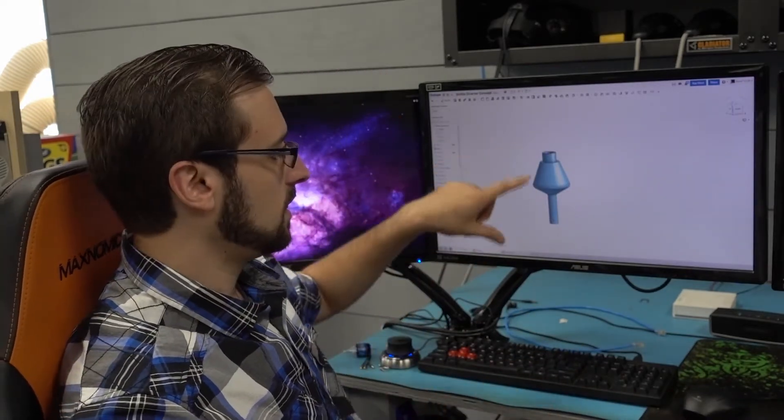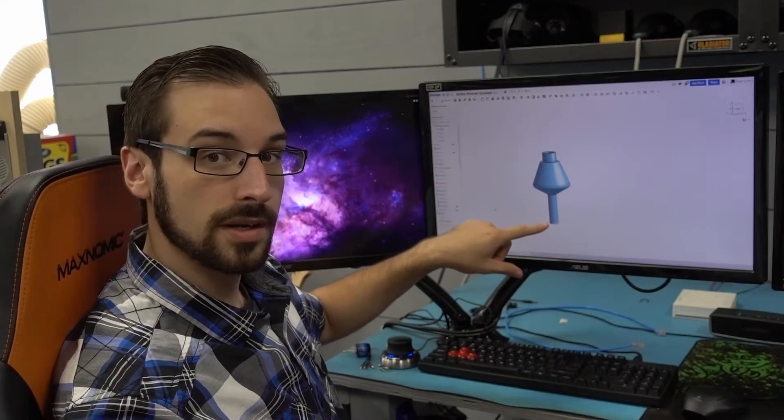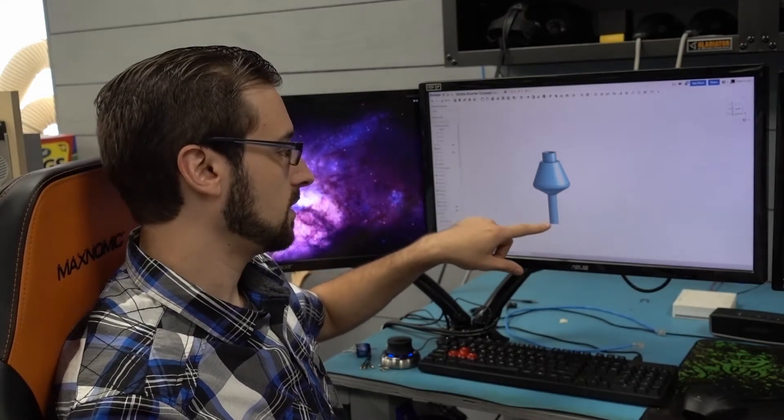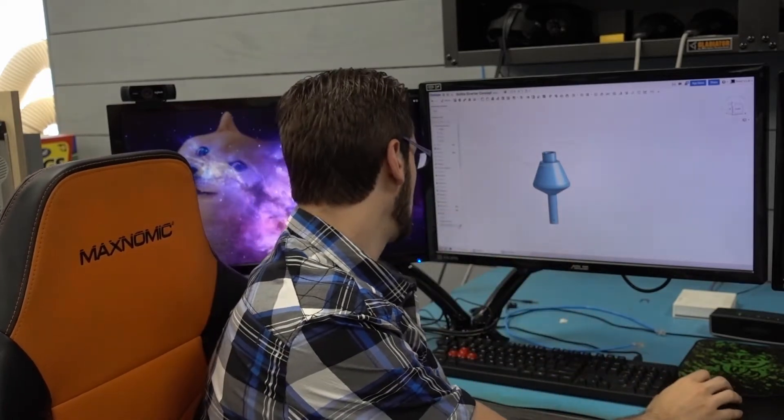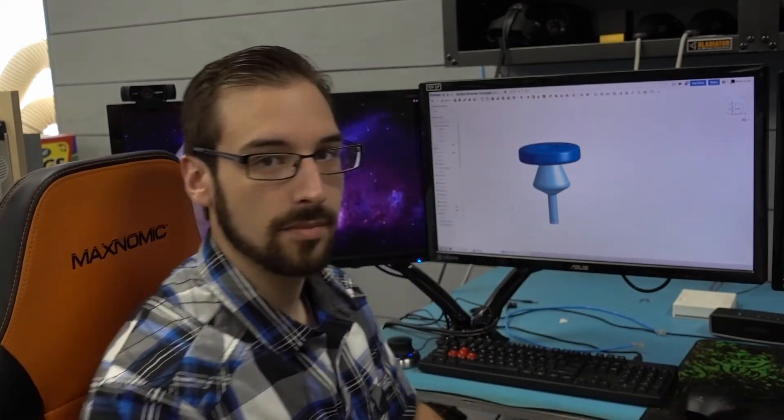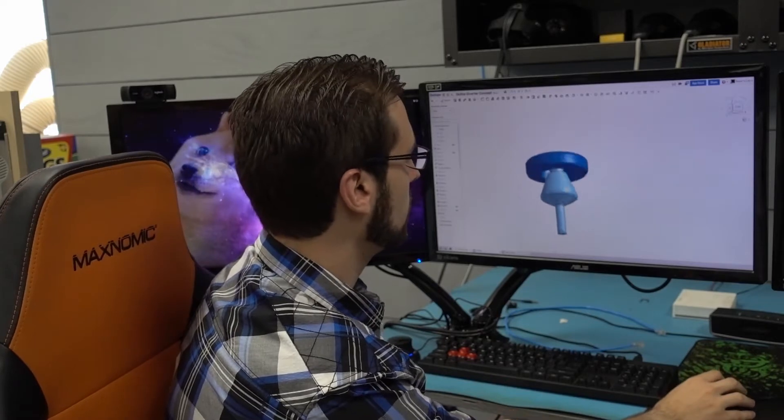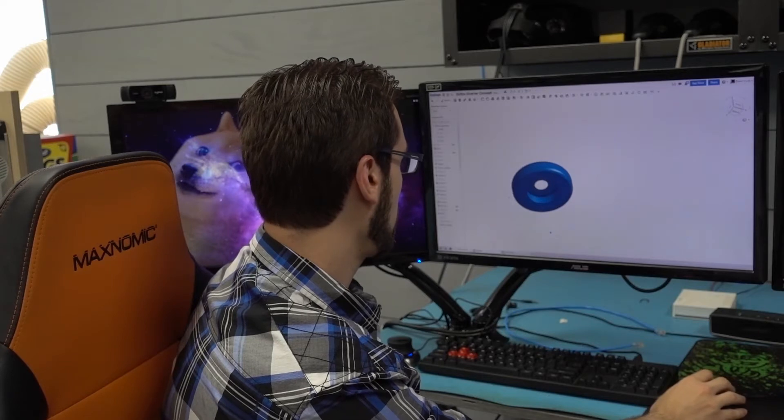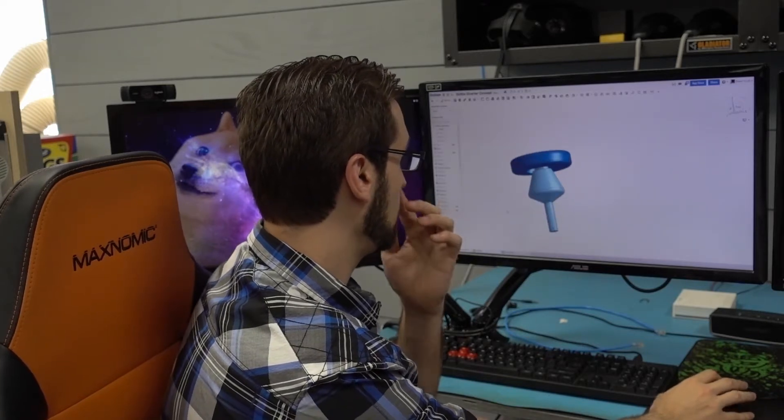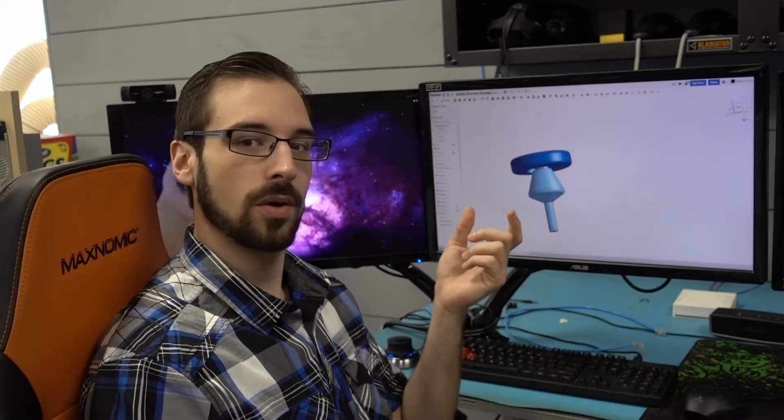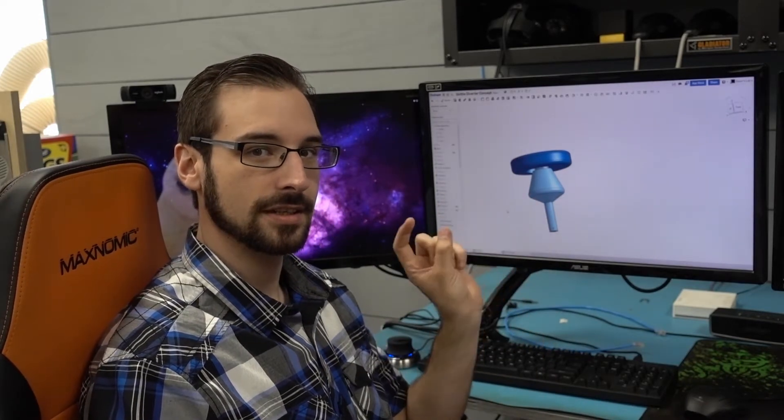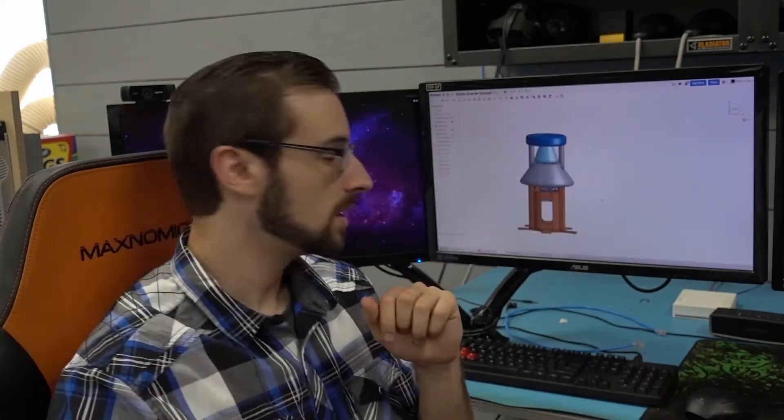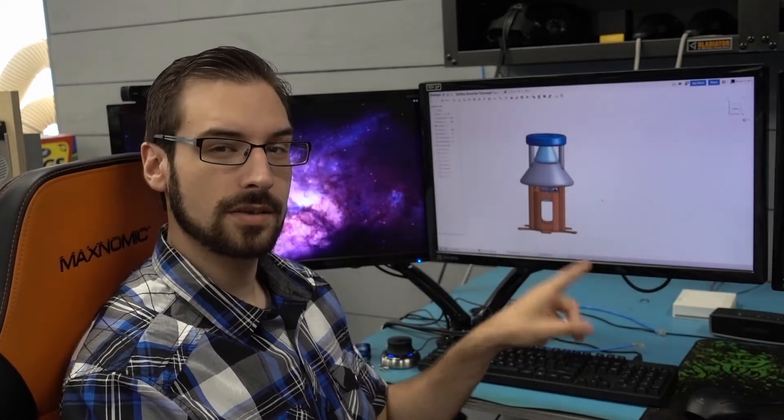So here you can see the selector is going to be supported on the bottom by the motor shaft here. But there's nothing up top to keep it vertical. So I am adding a bearing, there's going to be a bearing inside this cavity here. And that is going to both allow Skittles to pass through, and also hold the shoot selector in position. So this is what it's going to look like, let's go ahead and get that printed.